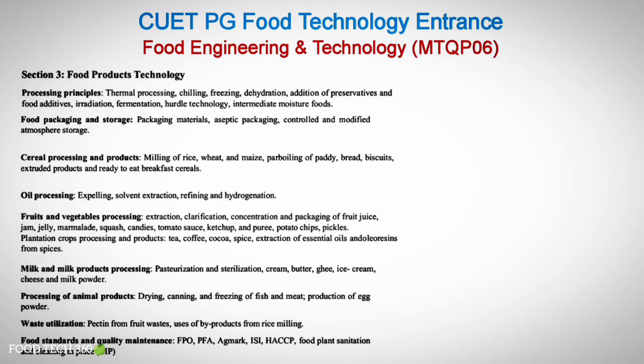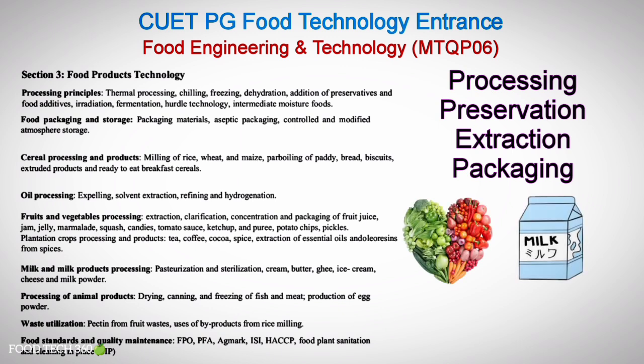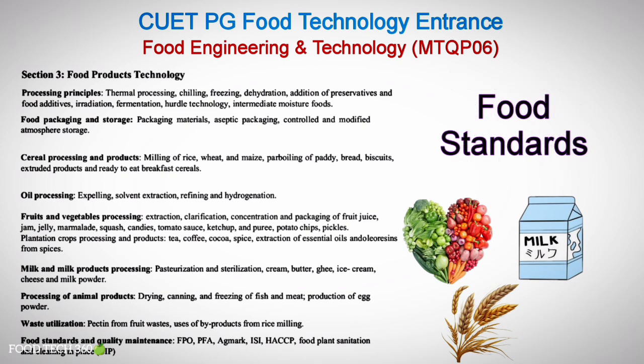Section 3, Food Products Technology, deals with the processing, preservation, extraction, and packaging of different food products such as fruits and vegetables, milk and milk products, cereal products, etc. Questions related to different food standards are also asked from this section.